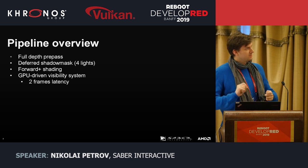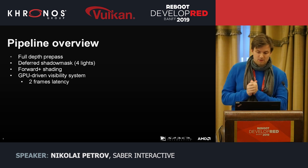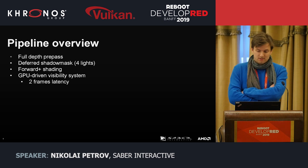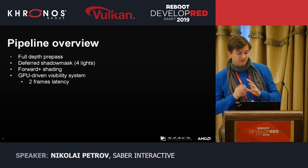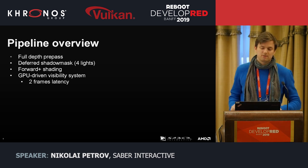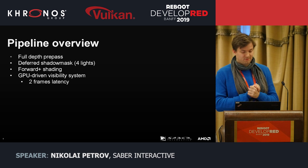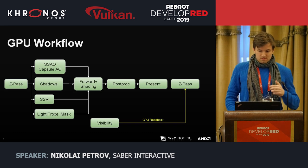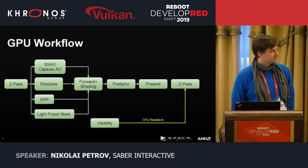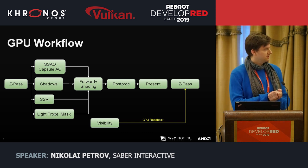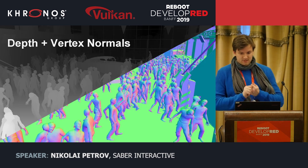Our engine employs a GPU-driven visibility system that does frustum and occlusion culling for the whole scene. Results are read back on the CPU side, which involves a two-frame latency — a classical scheme where the game thread runs in parallel with the previous frame rendering, and the GPU runs slightly behind. Here is the GPU diagram for one frame: parallel rectangles represent operations running simultaneously, and arrows indicate data dependencies.